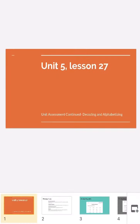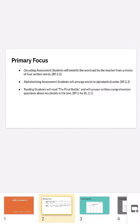Hi boys and girls, today for Skills Unit 5 we are doing Lesson 27 and in this lesson your unit assessment continues. You will be decoding words and putting them in alphabetical order. In the first part you will be identifying the word that I say from a choice of four written words. You will also be alphabetizing during an assessment and you will arrange words in alphabetical order. You will be reading the last story, the final chapter called The Final Battle, and you will answer written comprehension questions about key details in the text.